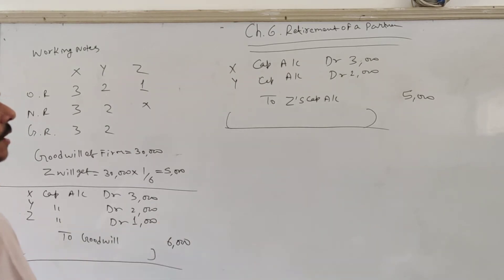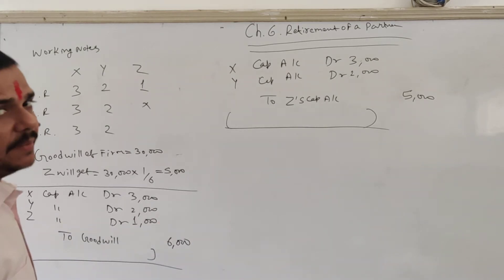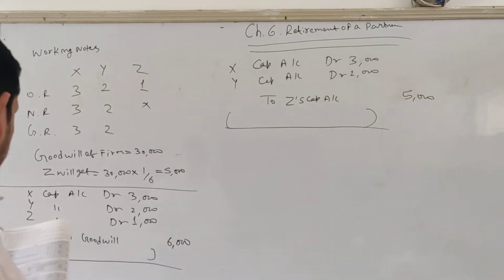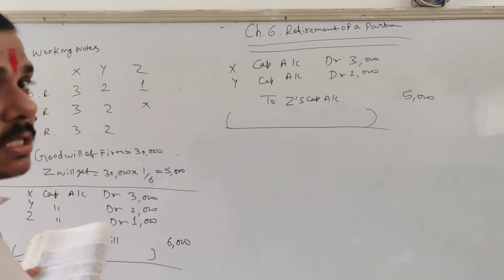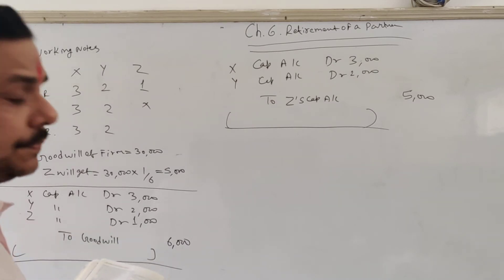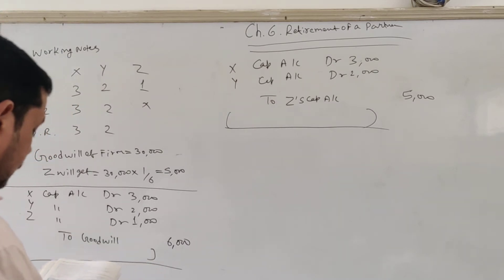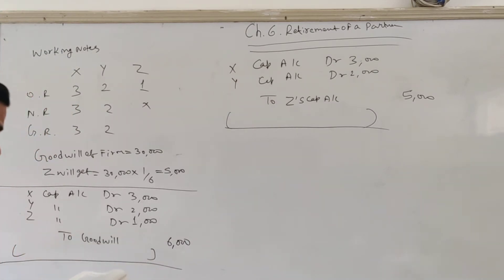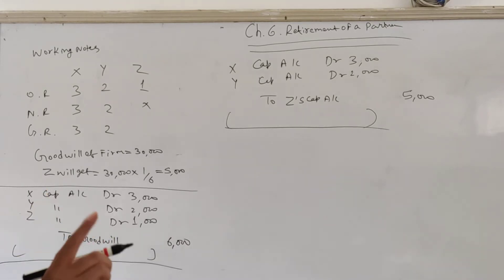The revaluation account is to be prepared as usual, and there is a loss on revaluation of 4,800.